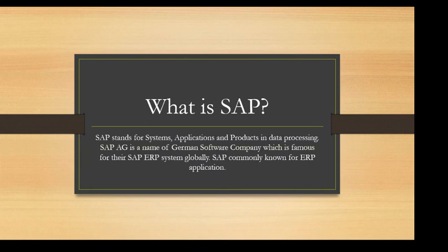We need to understand what SAP is. SAP is the name of a company and also the name of a product. SAP stands for System Application Product in Data Processing. It's a German-based company and it's mostly known for its ERP application.